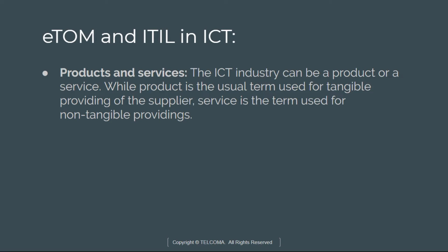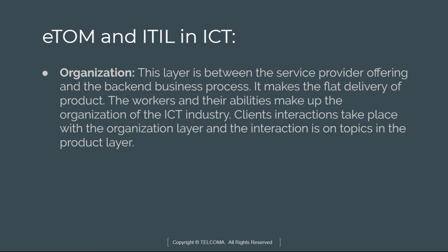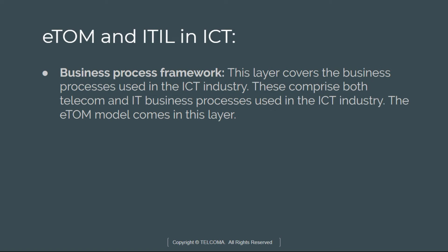Next is the products and services layer. The product is a term used for tangible offerings from suppliers, while services is the term used for non-tangible offerings. The organization layer sits between the service provider offering and back-end business processes, enabling flat delivery of products. The workers and their abilities make up the organization of this industry.